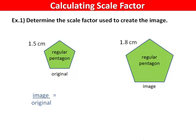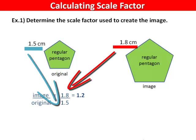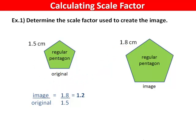Start with the measurement of the new image, and divide by the corresponding measurement of the original. So in this case, one decimal eight divided by one decimal five is one point two. So the scale factor is one point two.